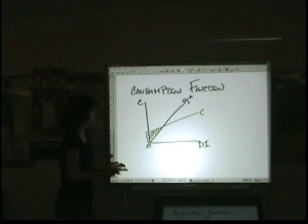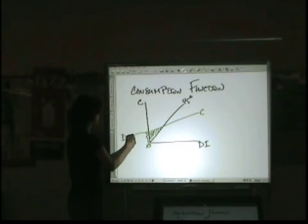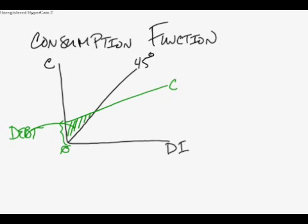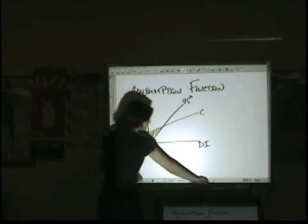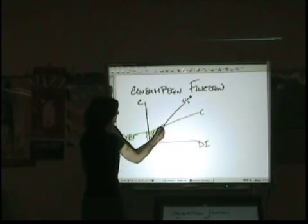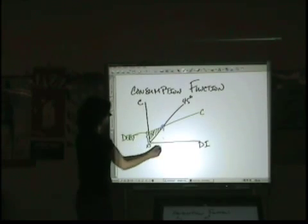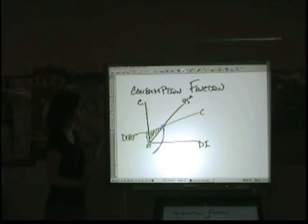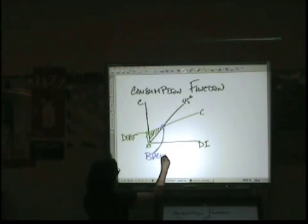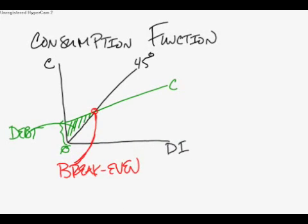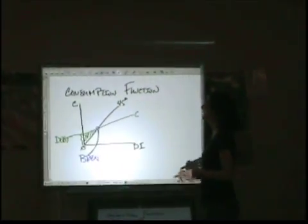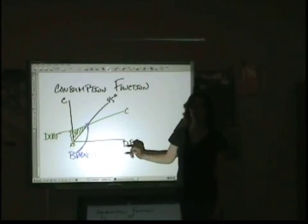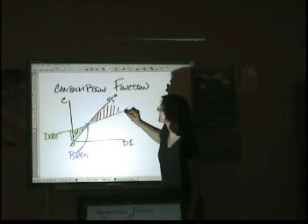But that's not realistic — that's not how people live. What tends to happen is that when your income is very low, you incur debt. That's what this area represents. You can see that because the consumption line is higher vertically than the reference line. As your income increases, you get to a point when you break even — when the consumption function crosses that 45-degree line so that your consumption equals your income. That's your break-even point, meaning you are neither saving nor going into debt. And as you cross that line, so that your consumption line is below your 45-degree line, this area represents the amount of savings.